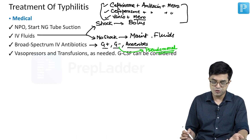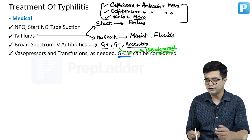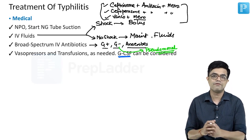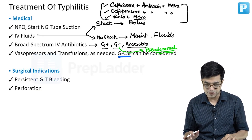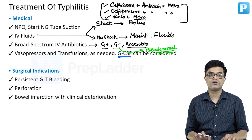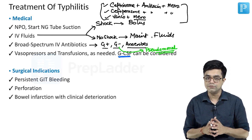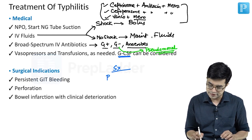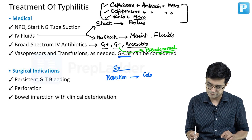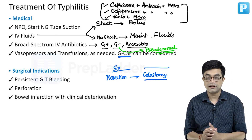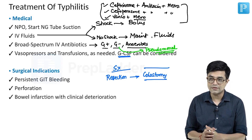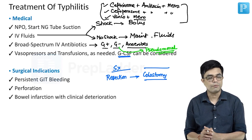Vasopressors and transfusions will be needed. GCSF can be considered although it is not very effective in acute patients. Surgical indications include persistent GI bleeding, perforation, and bowel infarction with clinical deterioration — the infected necrosed part will need to be removed. When surgery is performed, resection of the involved segment is done followed by colostomy. Primary repair is not performed; late-stage repair is done, but recurrences, strictures, and fistula formation are known complications.